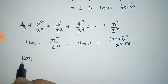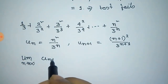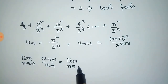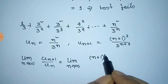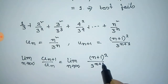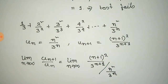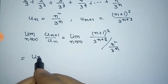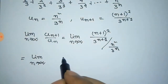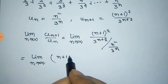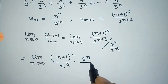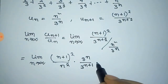By the D'Alembert's ratio test, we write: limit as n tends to infinity of u_{n+1} / u_n. This equals the limit as n tends to infinity of (n+1)² / 3^{n+1} multiplied by 3^n / n².